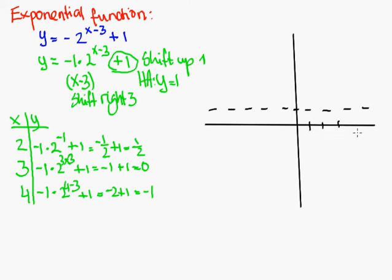There's my asymptote. Then at 2, 3 and 4 I should get a dot. So at 2 I have a half, so I'm about right there because that was 1. At 3 I'm at 0. And at 4 I'm at a negative 1.